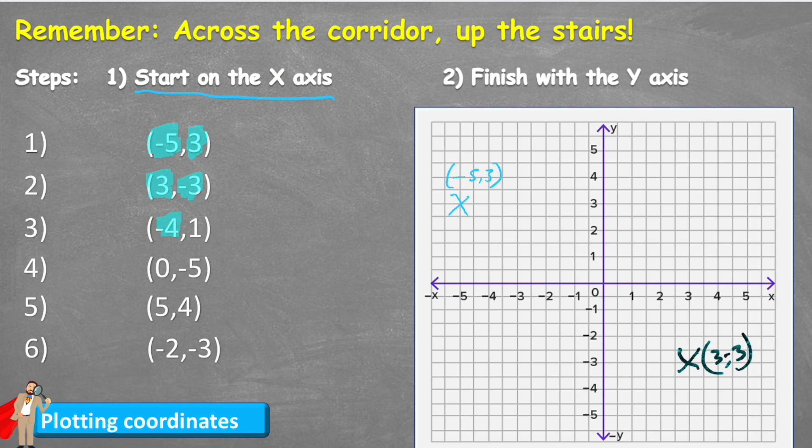Number 3 has a negative 4 on the X axis, so that would be just here, and a positive 1 on the Y axis being just here. Same thing again, draw a line across those lines and find where they meet.